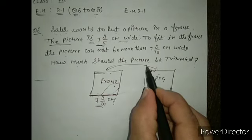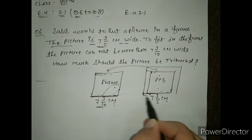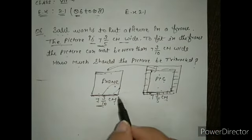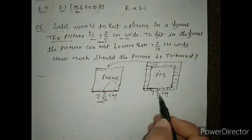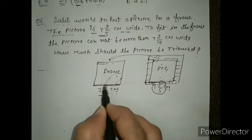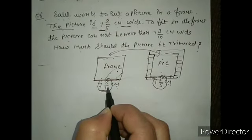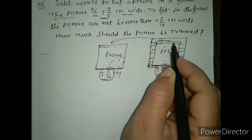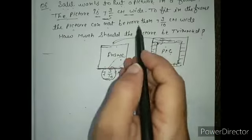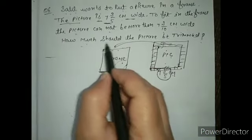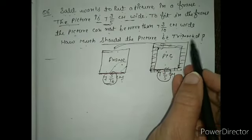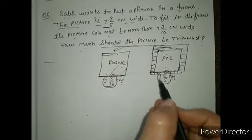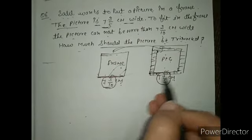We have to trim it — trimming means we remove the extra part. So how much to remove? We subtract the remaining portion from the picture length. The picture cannot be more than 7 and 3/10 centimeters wide. We have to find how much should the picture be trimmed. It is a very simple question.